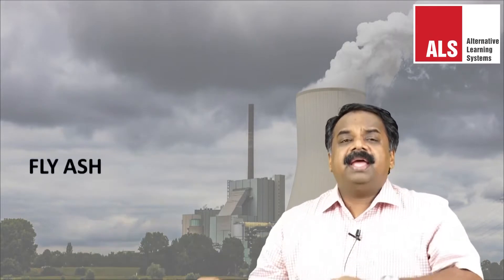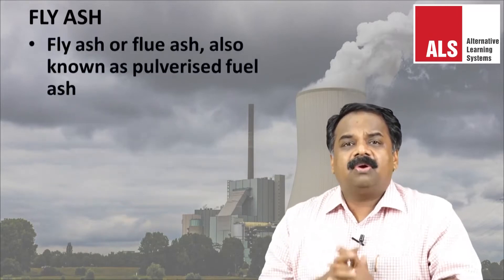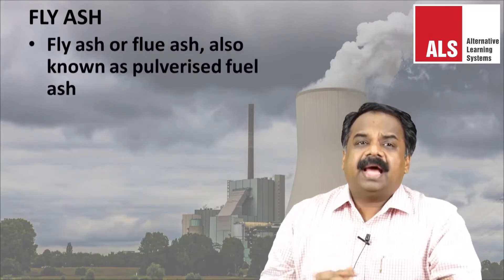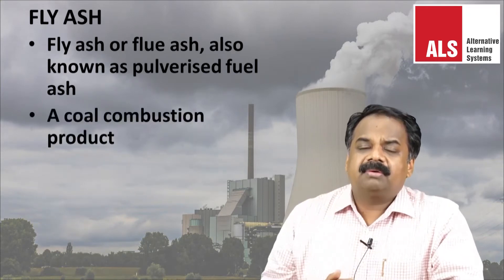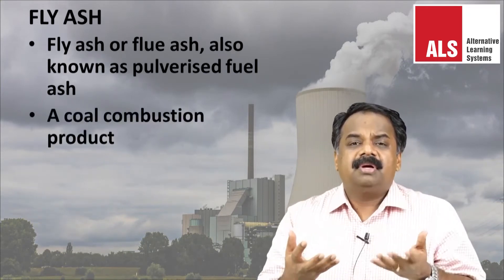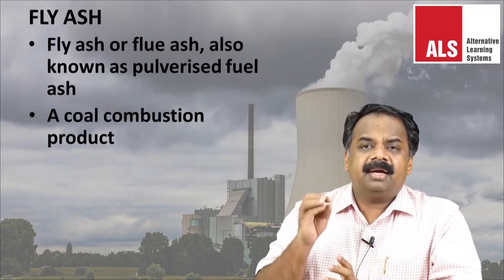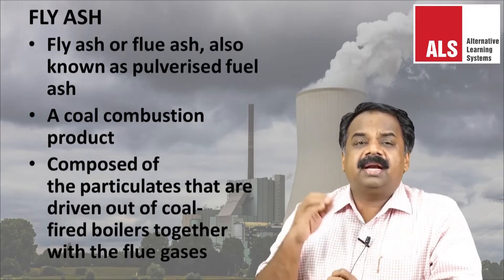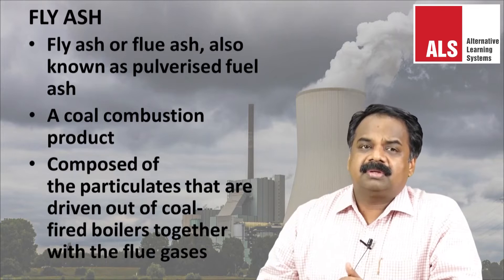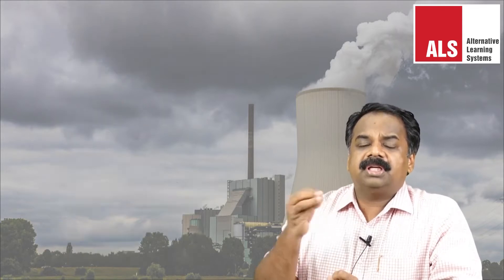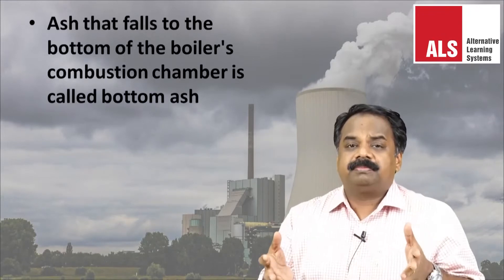Fly ash, or flue ash (F-L-U-E), is also known as pulverized fuel ash. It is a coal combustion product — a byproduct formed when coal is burnt. It is composed of particulates driven out of coal-fired boilers together with flue gas. Ash that falls to the bottom of the boiler's combustion chamber is called bottom ash.